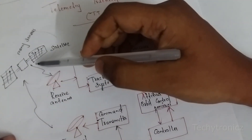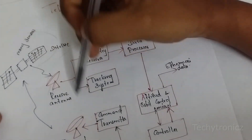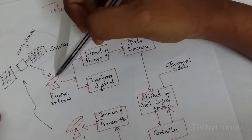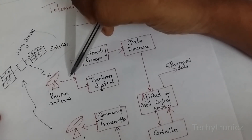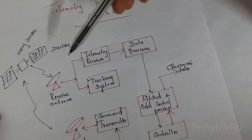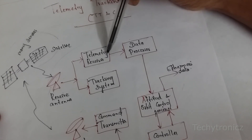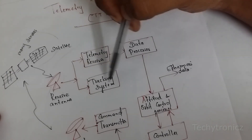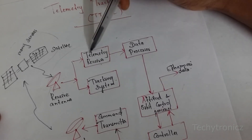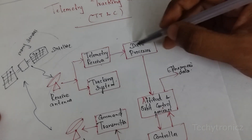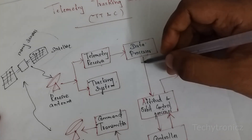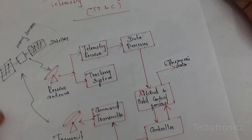The information from the satellite is given to the earth station in wireless form. They transmit the information through the antenna. Here, the earth station antenna receives the information from the satellite — that is the receive antenna. After getting the information, it gives it to the telemetry receiver and the tracking system.